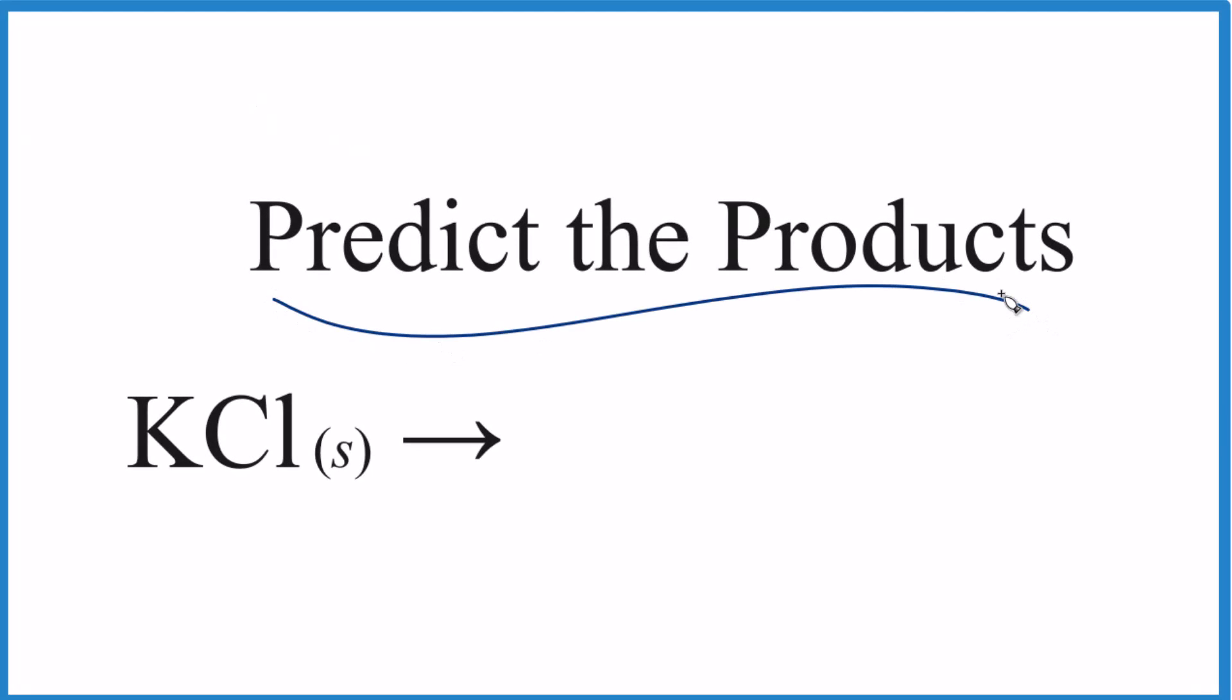So how do we predict the products of this reaction here? We have KCl, potassium chloride. It's a solid and something's happening to it. What could possibly the products be?